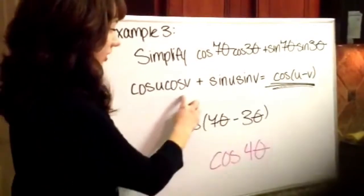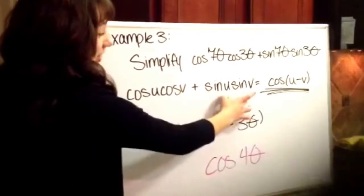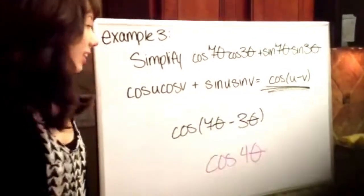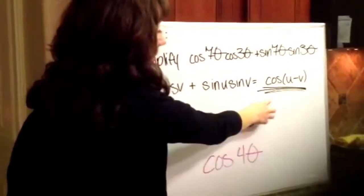So first thing you want to do is look at this problem and figure out which formula it is. So if you look at it, it's cosine u cosine v plus sine u sine v. So since the cosines are together and the sines are together, we know that it's cosine. And since it's adding and it's a cosine, we know that it's going to be the opposite. So we know it's cosine u minus v.